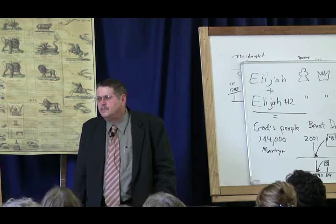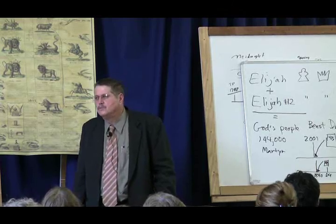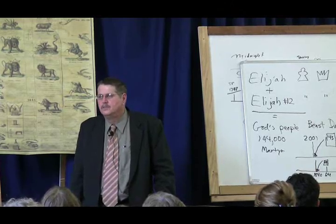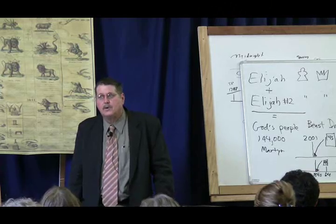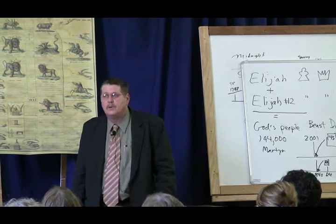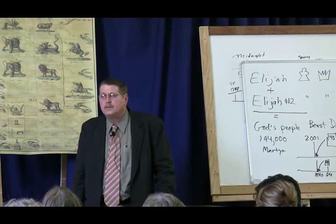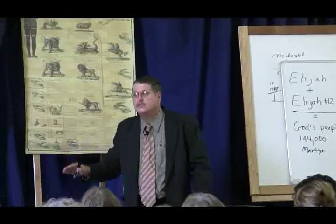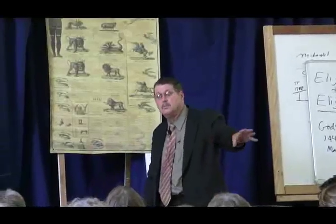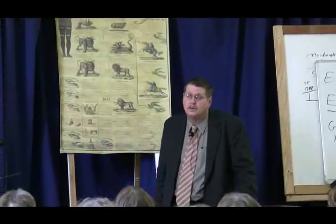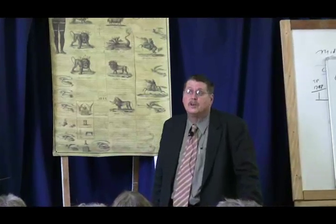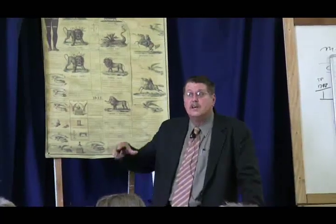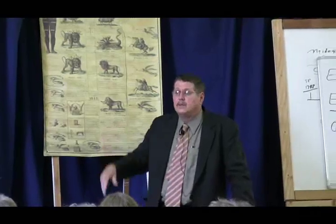In Revelation 13, the papacy, of whom the Pope is the representative, receives a deadly wound in 1798. It's taken off the throne of the earth. But in Revelation 13, there's another beast that arises. And that beast comes up out of the earth. In Bible prophecy, the earth means in relation to the sea. The sea represents peoples. Where the papacy rose was in Europe, where there were many peoples. But the earth beast, the second beast, rises in the United States, which at that time is uninhabited.